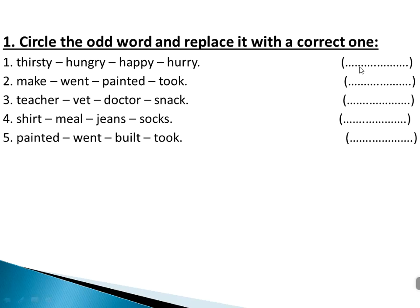Number two: make, went, painted, took. All of them are verbs in the past — either regular or irregular past tense — except 'make', which is in the base form. You can replace 'make' with a past tense verb.